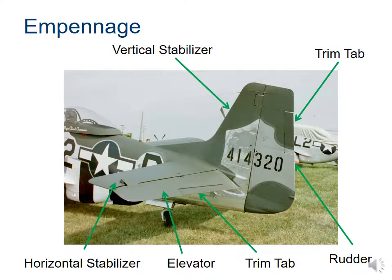When the trim tab goes up, the elevator goes down, the tail goes up, and the nose goes down. So if the tab goes up on the elevator, that causes the elevator to go down, the tail goes up, which causes the nose to go down — it's a back-and-forth, opposite relationship. The same goes with the tab on the rudder: it moves in the opposite direction of which way you want the plane to go.